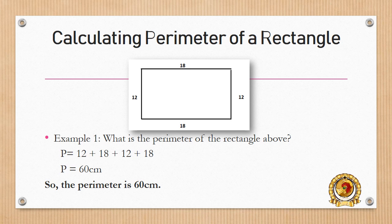Calculating perimeter of a rectangle. Example 1. What is the perimeter of the rectangle above? By now, you should know to find the perimeter of a rectangle, you need to add all sides of the rectangle.